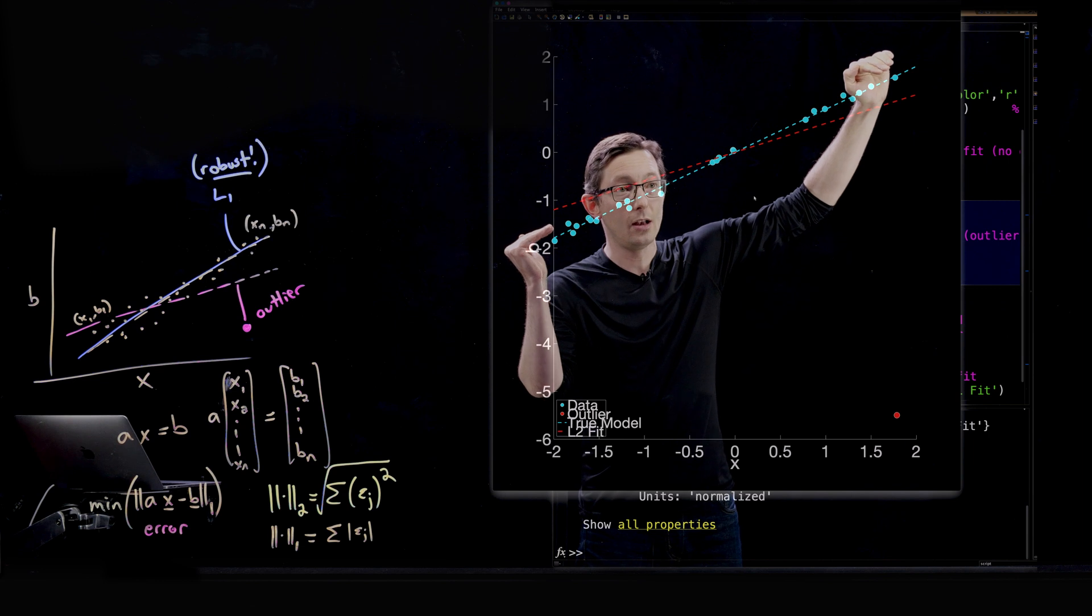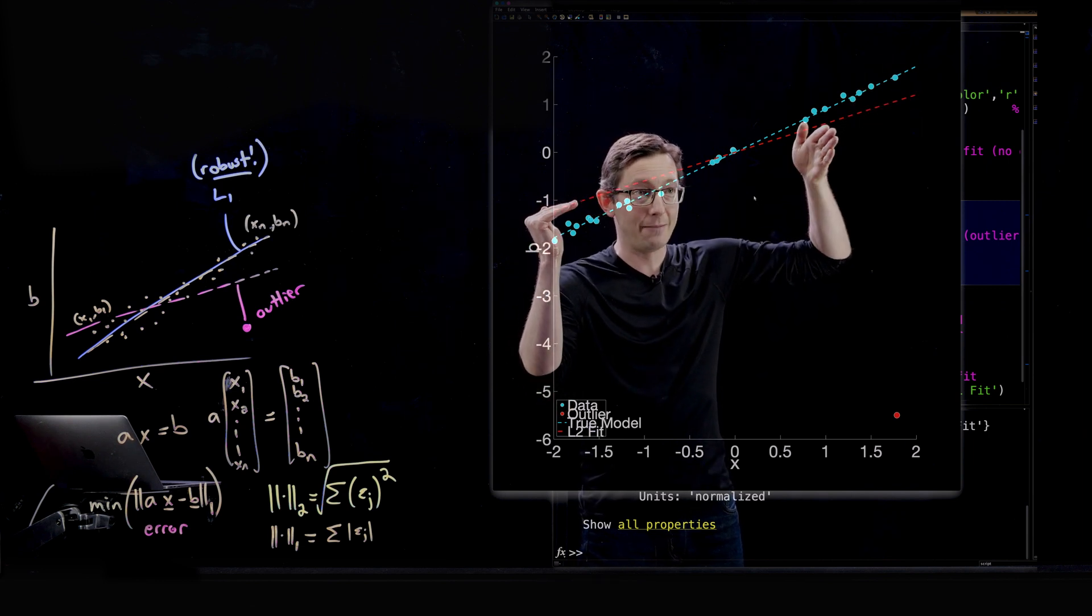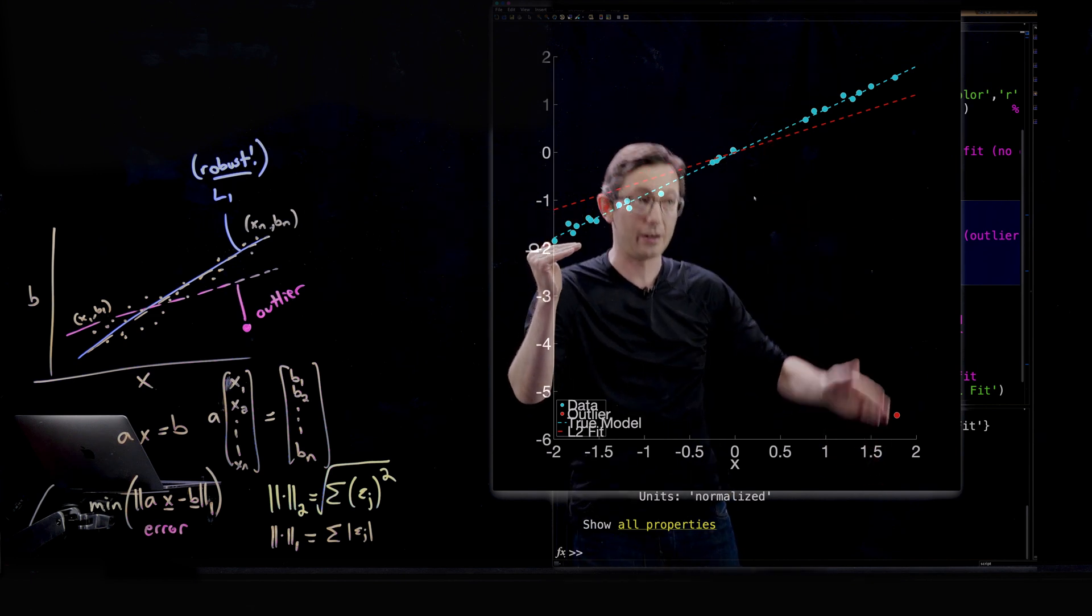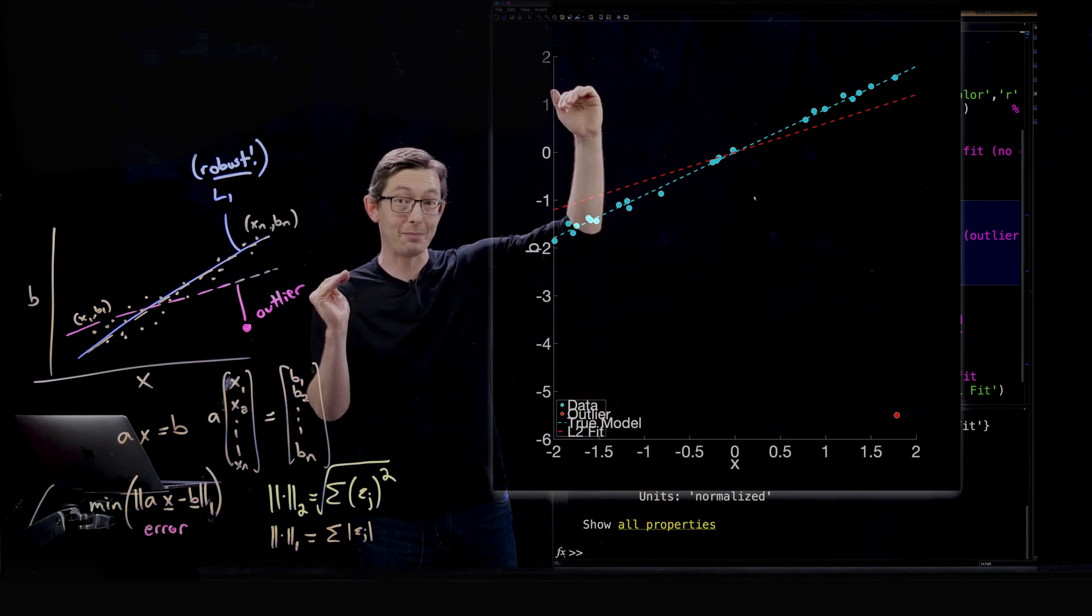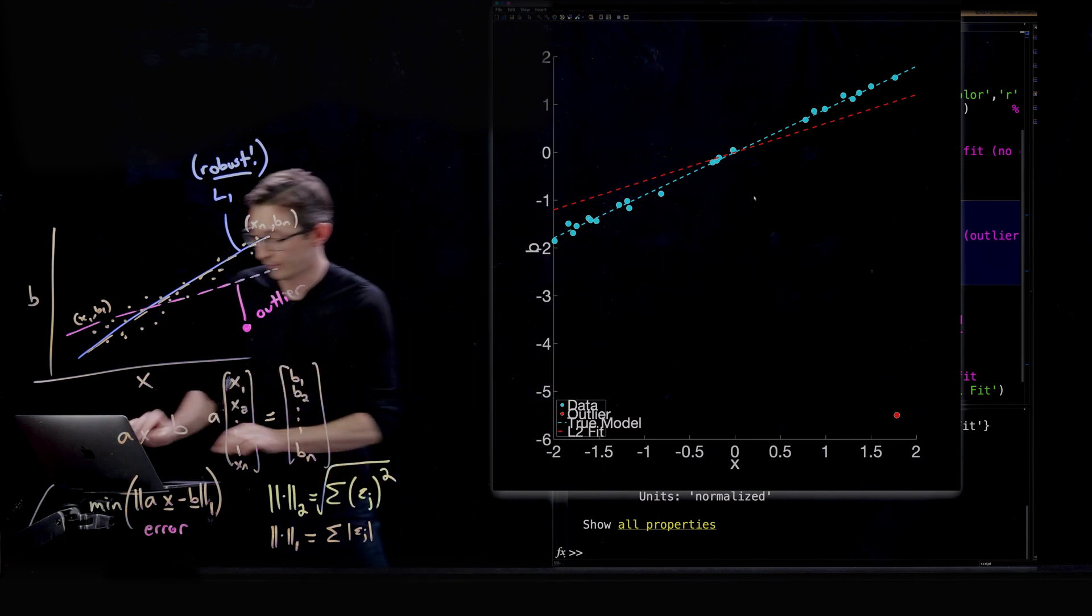I mean it is the whole, the whole fit is getting tilted down so that I'm mitigating the effect of this huge squared error because of that one outlier. So that one outlier is messing it up for the whole rest of the distribution in least squares.